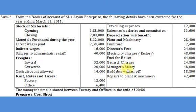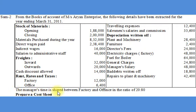Manager's Salary Rs. 48,000; Bad Debts Written Off Rs. 18,800; Repairs to Plant and Machinery Rs. 42,400. Additional Information: The manager's time is shared between factory and office in the ratio of 20 to 80.